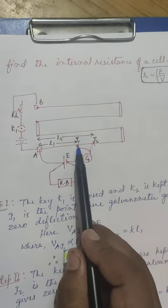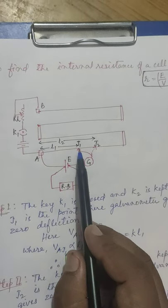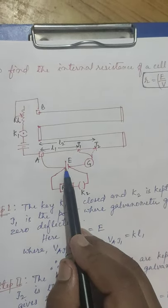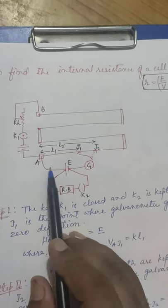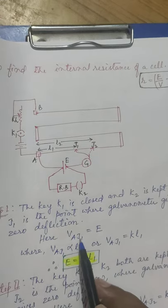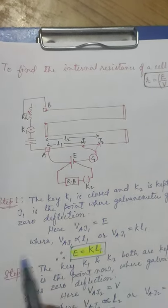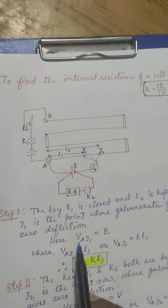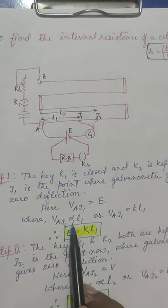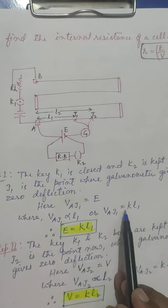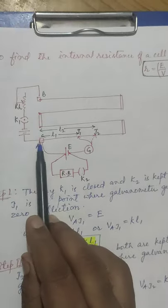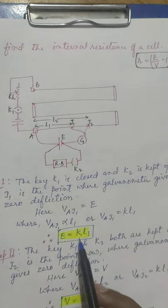We find a point J1 where the galvanometer gives zero deflection, meaning no current flows through the galvanometer branch. Since K2 is open and the galvanometer reads zero at J1, the negative terminal has a potential equal to that of J1 and the positive terminal has a potential equal to A. Therefore, the potential difference between the terminals — which equals the EMF of the cell — equals VAJ1. This length between A and J1 is L1, so VAJ1 = KL1, meaning EMF = KL1.